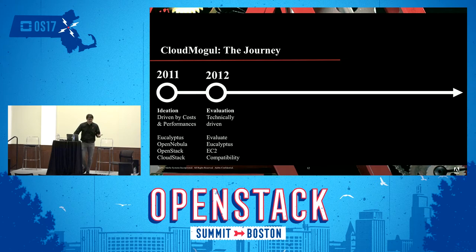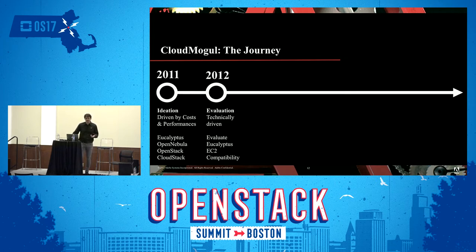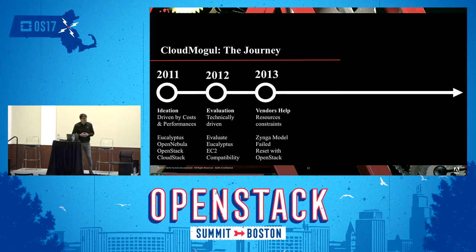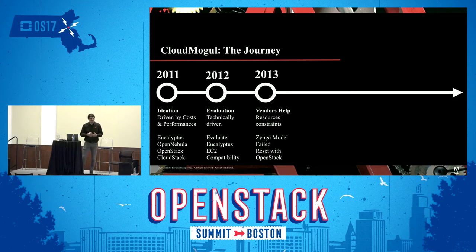In 2012, we tried to evaluate these options. We were more and more excited because the technical challenges we were facing with our public cloud provider, we weren't able to address them meaningfully. We tried Eucalyptus and were looking at EC2 API compatibility, which was very important to us at that time. But we weren't able to make meaningful progress — it required a lot of effort. In 2013, we chose to have vendors help us using the Zynga model, which was heavily based on CloudStack. But that was kind of a big failure — we saw no cost savings and no path to the technical solution we needed.